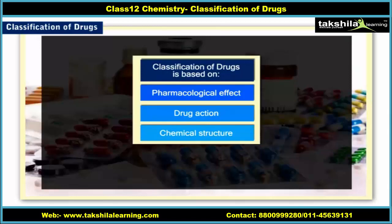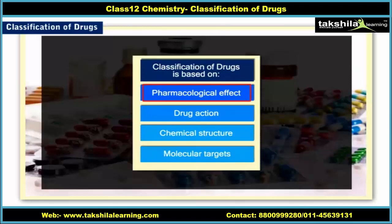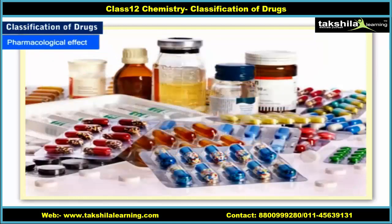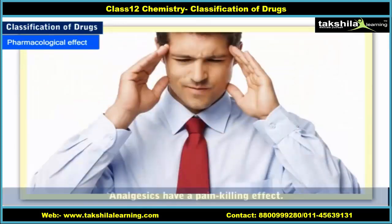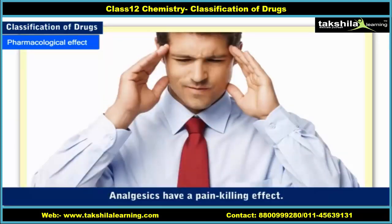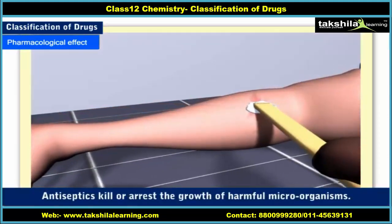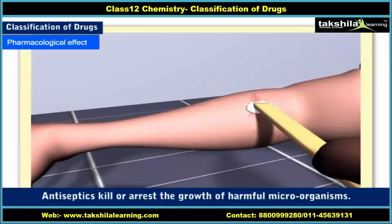Drugs can be classified on the basis of their pharmacological effect. Drugs classified on the basis of their biological or pharmacological effects are useful in treating a particular type of problem. For example, analgesics have a pain-killing effect, whereas antiseptics kill or arrest the growth of harmful microorganisms.